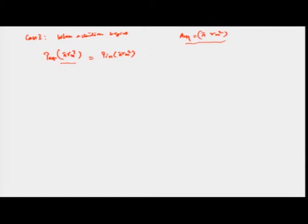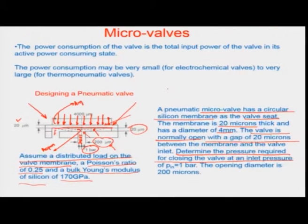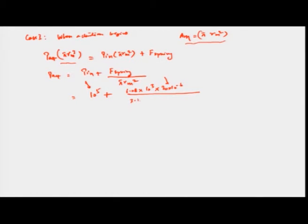The inlet pressure acting over π·R_m² plus the spring force makes up the force balance equation. Dividing by π·R_m², we get P_actuation = P_inlet + K·x / (π·R_m²). With inlet pressure = 1 bar, spring force = K × 20 microns (the gap to cover from open to closed), divided by π × (2×10⁻³)².